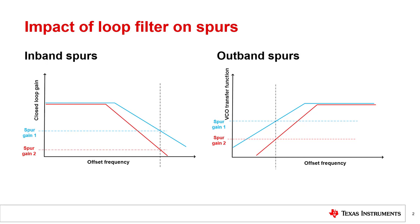In-band spurs are those spurs that go through the loop filter and are low-pass filtered by the loop filter. The spur gain for in-band spurs is defined as a gain of the closed-loop transfer function at the frequency offset of the spur. The level of in-band spurs is directly related to the spur gain. If the spur gain decreases by 3 dB after changes to the loop filter, then you can also expect the spur magnitude to decrease by 3 dB.